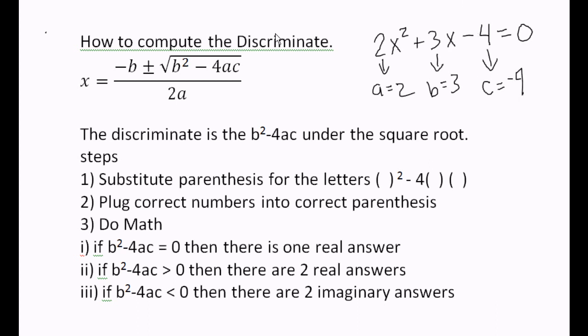So we can plug these numbers into the discriminant. The discriminant is just the part inside of the square root, the b squared minus 4ac. That's what we call the discriminant.